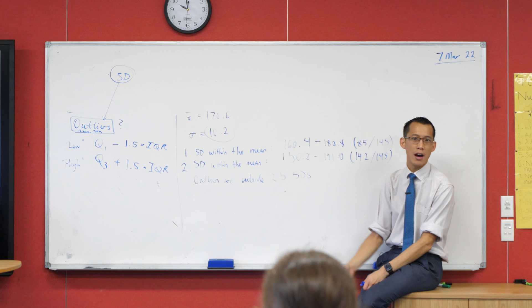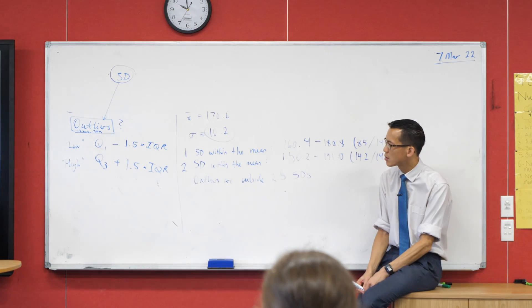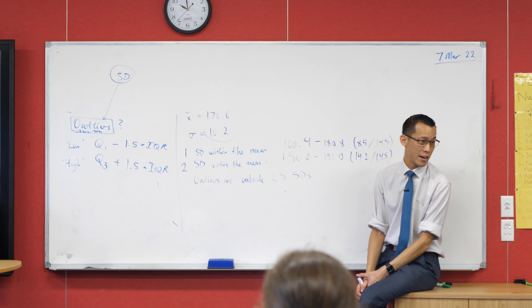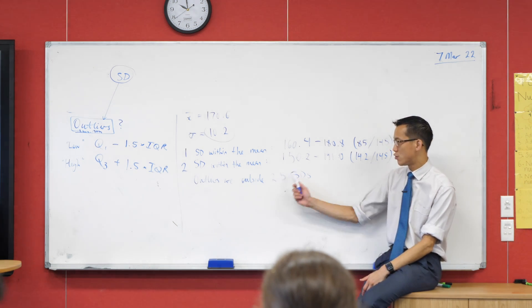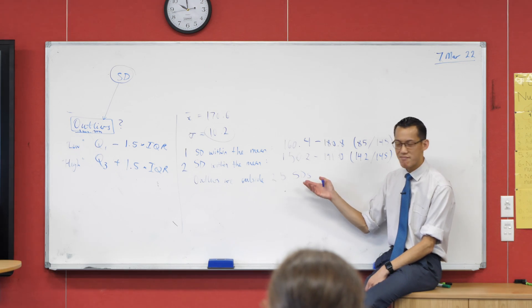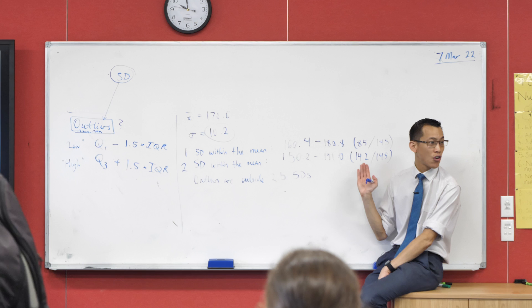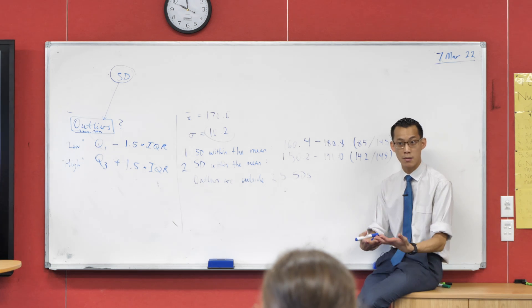Now, this two and a half, that one and a half, to some degree, it's kind of arbitrary, right? It's like, why did someone say 1.5 interquartile ranges and not 1.4? Why is it 2.5 and not 2.6? It was chosen because this captures, you know, what most data is like, but it's not a guarantee. We always have to interpret. Does that make sense?